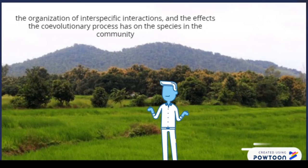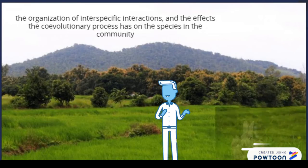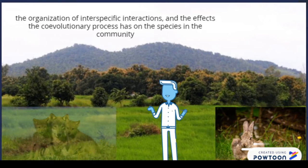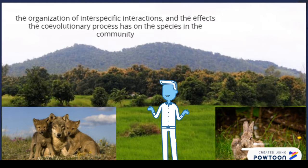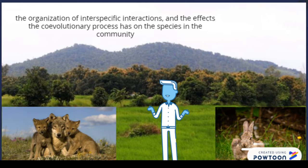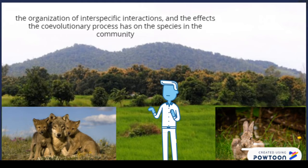As can be seen between predators and prey, their evolution depends on their interactions between the two species. Community ecology would be how these species have developed over time against each other.